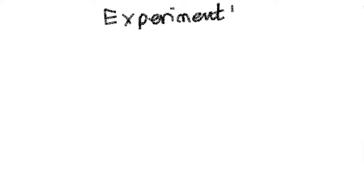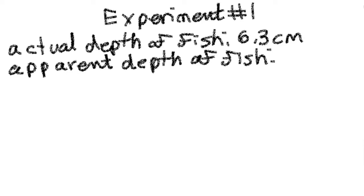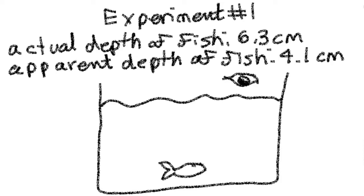In our experiment, we measured the actual depth of the fish in the container to be 6.3 centimeters, and the apparent depth of the fish that we were seeing with our eye to be about 4.1 centimeters. If we were to transfer this into a diagram like we made earlier, basically that X that I made earlier is the apparent depth, which is 4.1, but the fish was actually at 6.3 centimeters.